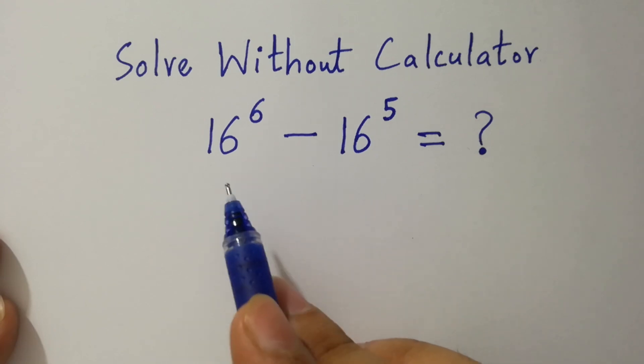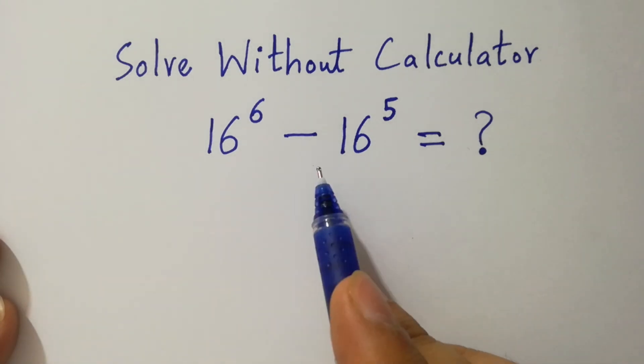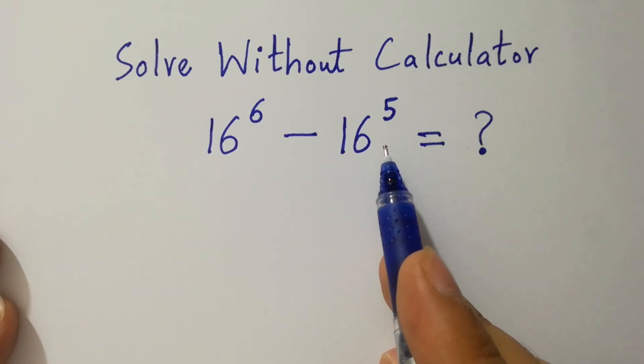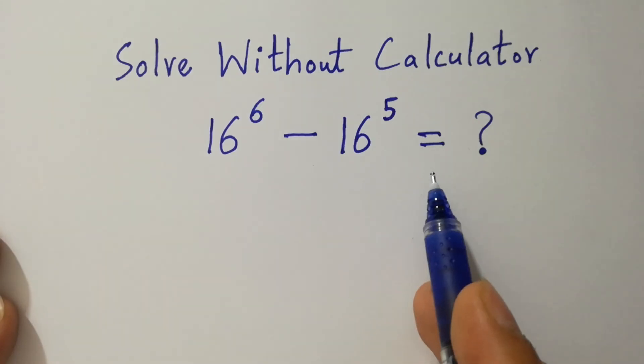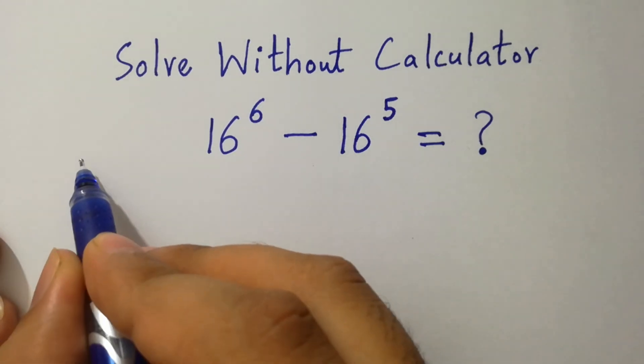Hello friends. 16 to the power 6 minus 16 to the power 5 equals what? Let's have a solution.